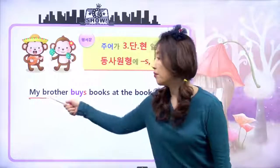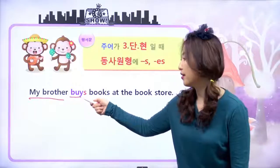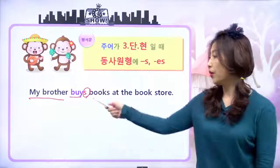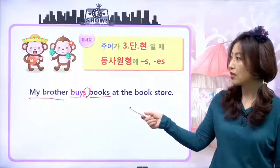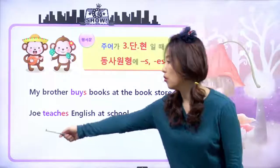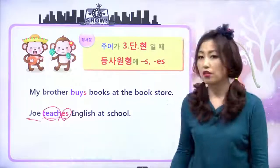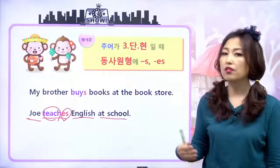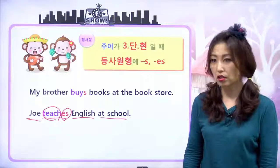그래서 예를 보면 my brother, 내 오빠/남동생은 buys, s가 붙었네요. books, 책들을 어디에서? At the bookstore. 우리 했던 문장을 선생님이 3인칭 단수로 주어만 변경한 거예요. 그리고 Joe는 teaches, 가르치다에 es 붙었어요. English, 영어를. 학교에서 영어를 가르친다 라는 얘기죠. 그래서 동사의 변신이 됐어요.